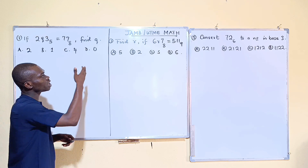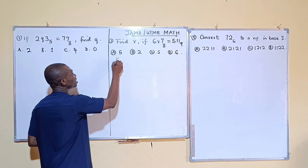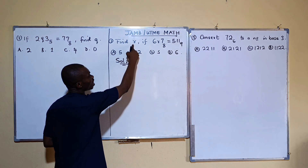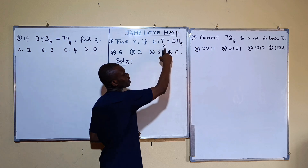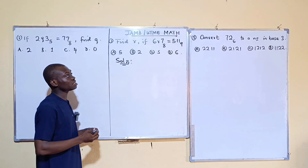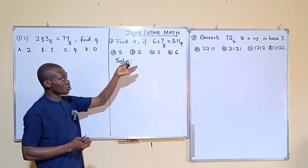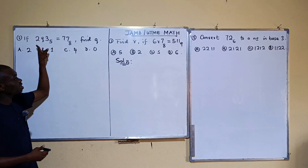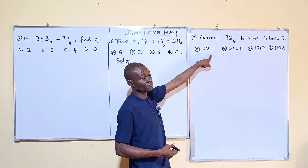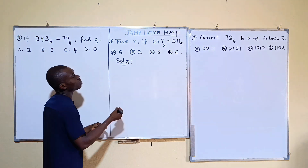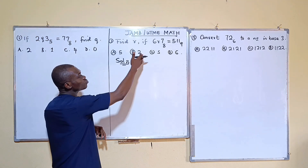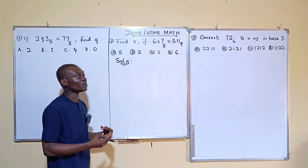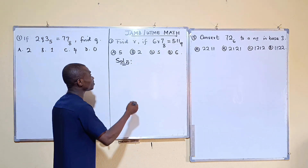The first question asks us to find the value of r if 6r7 base 8 is equal to 511 base 9. The same approach is applicable to the next questions — they are all basic. The simple thing to do is to move both sides to base 10 and then make r the subject to get its value. This one is in base 8 while the other is in base 9.